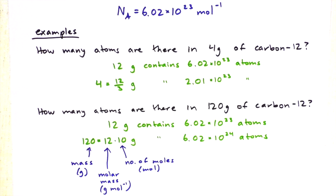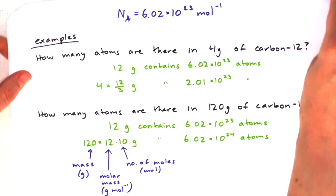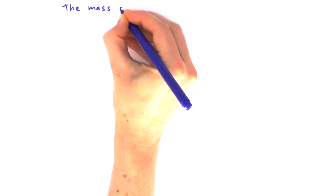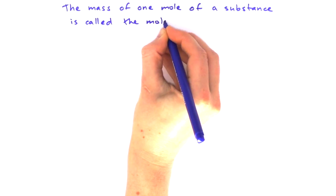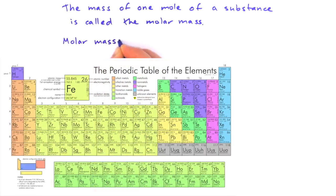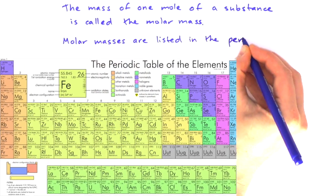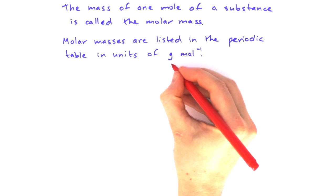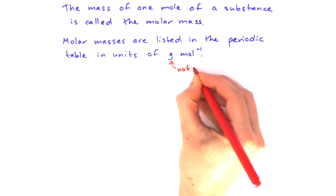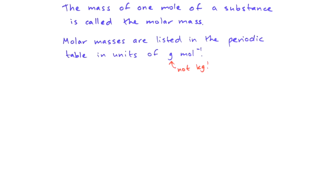The mass of one mole of a substance is called the molar mass. Molar masses are listed in the periodic table. The units of molar mass, interestingly enough, is grams per mole. Make sure you know it's not kilograms per mole, it's grams per mole.